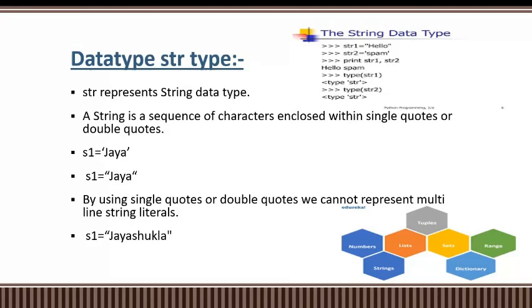String data type is represented as 'str'. A string is a sequence of characters enclosed within single quotes or double quotes. For example, s1 = 'Jaya' — this is a string. The name 'Jaya' is enclosed in inverted commas, and you can also use double inverted commas. This is the example of a string data type.